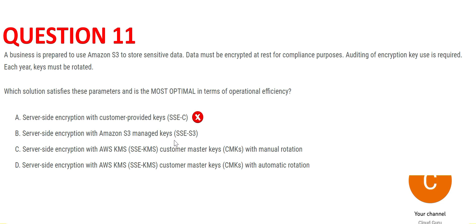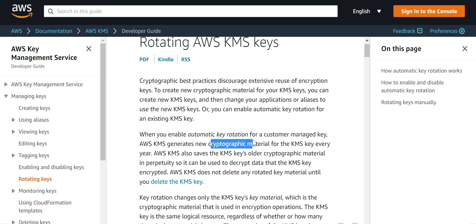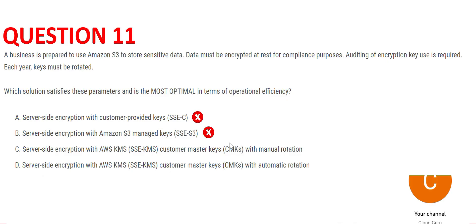Option B suggests S3 managed keys. S3 managed keys do provide rotation, but this is still operationally not the best option. The better option is customer managed keys in KMS, because when you enable automatic key rotation, new cryptographic material for the KMS key is generated every year. This is what we require for this answer, so Option B is wrong.